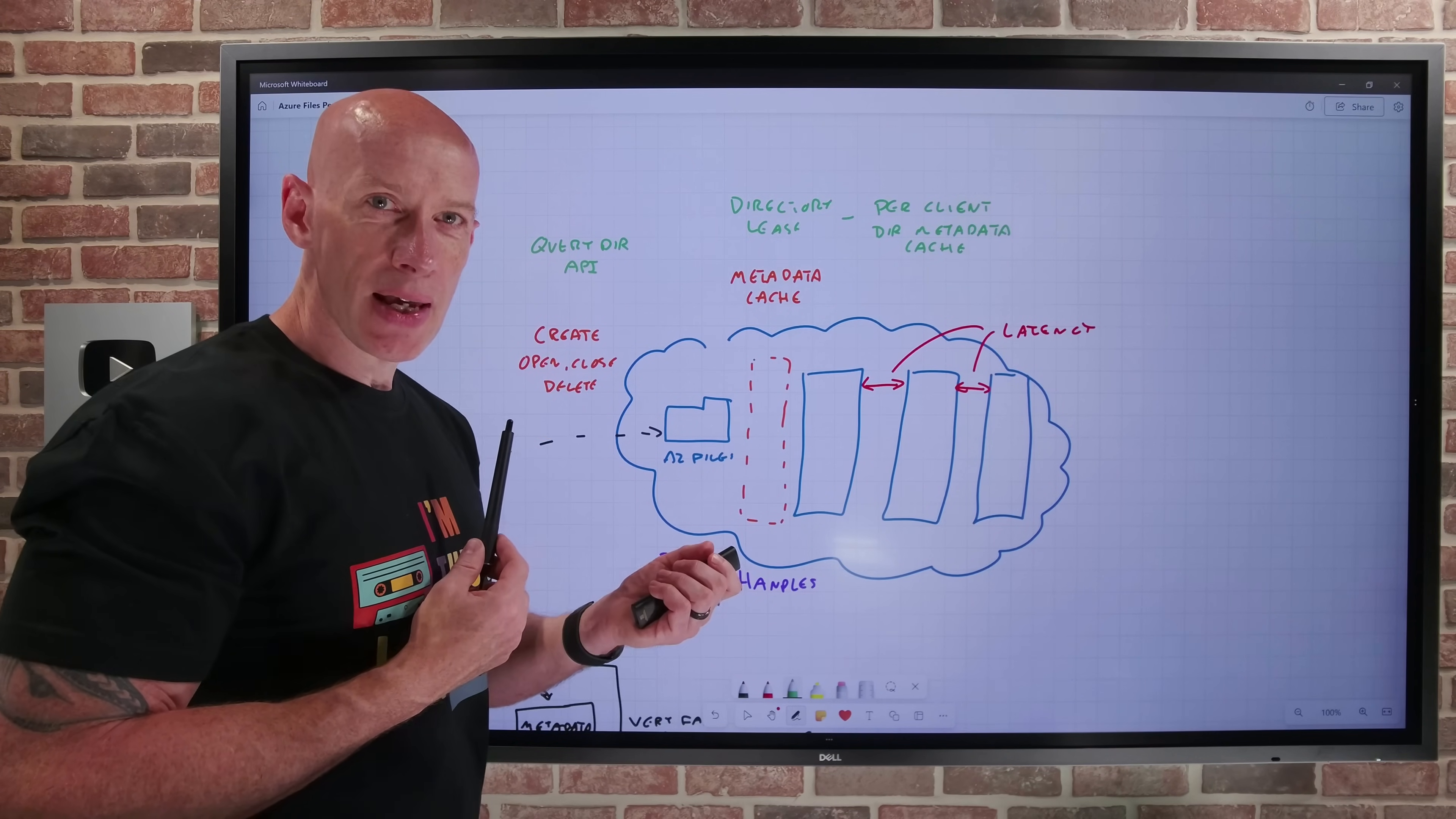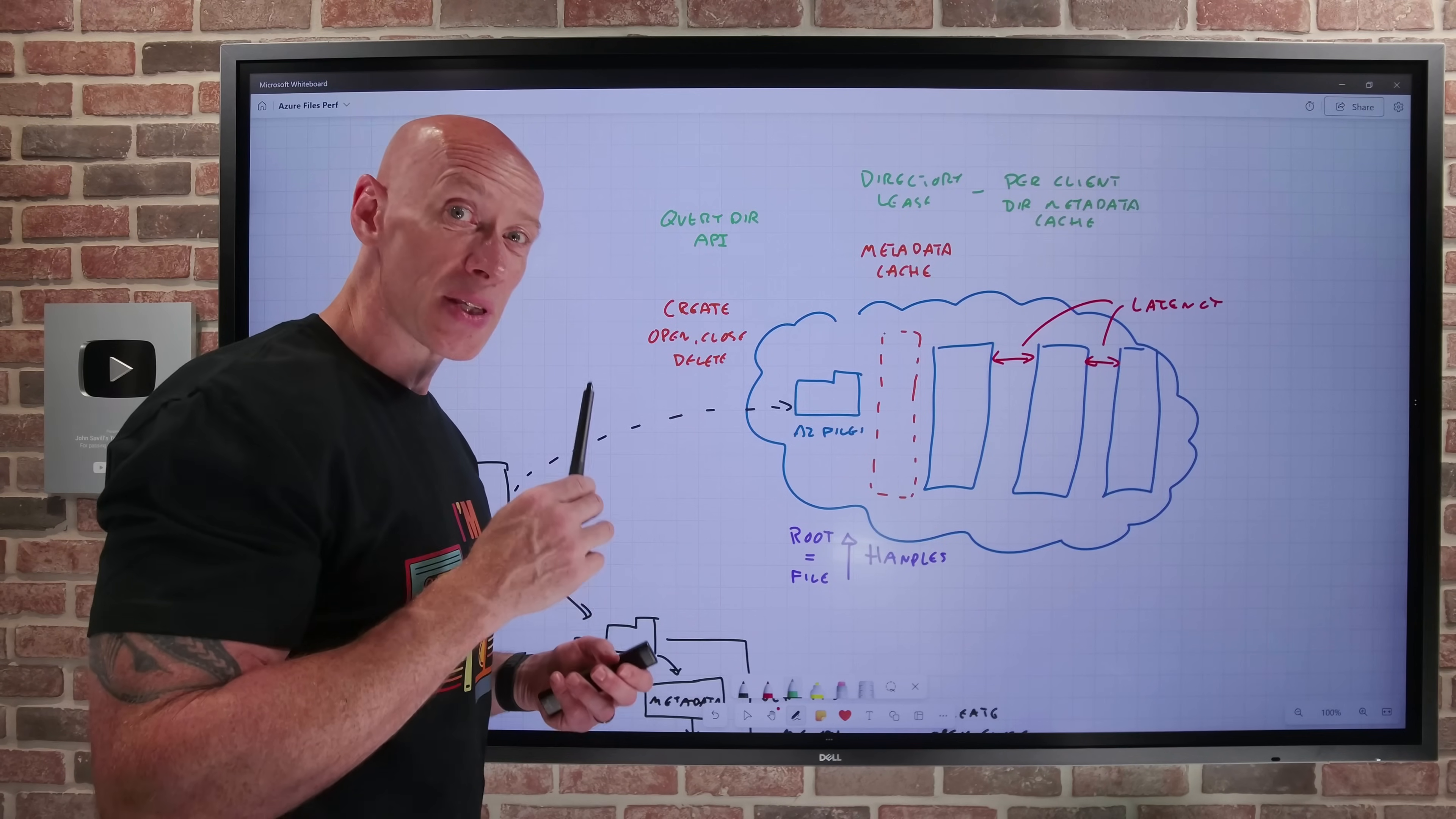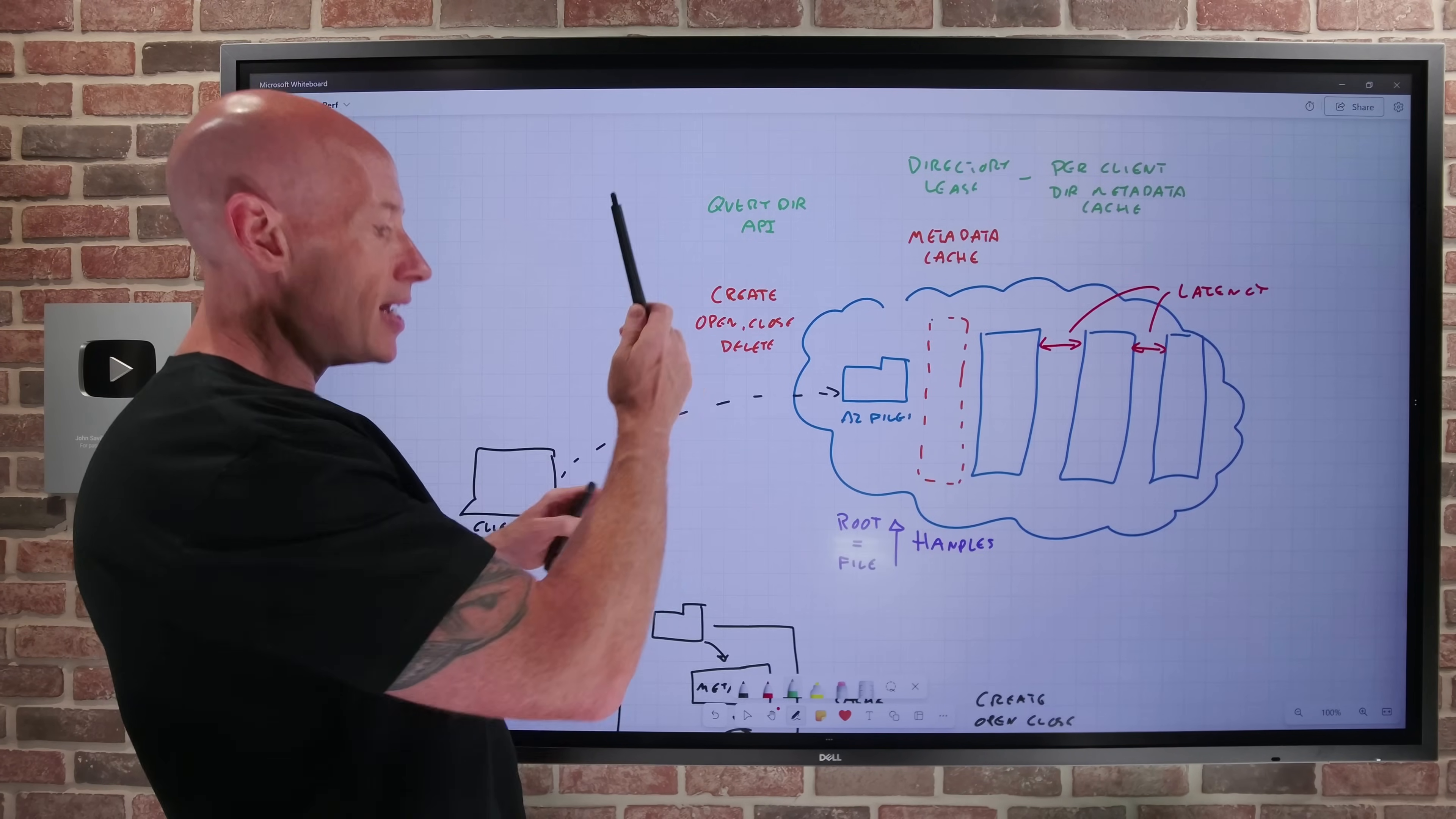Now there's different types of lease, like a read lease would be broken on a metadata change. A write lease will be broken on conflicting opens. A handle lease will be broken due to sharing violations, et cetera. But think of this as working as another layer. And this can actually result in a 97% reduction in directory enumeration time. If it's a large directory, so think 100,000 files. FS logic profiles. If I'm a Windows client and I'm working with a large FX logic profile, this is going to be a huge performance gain.